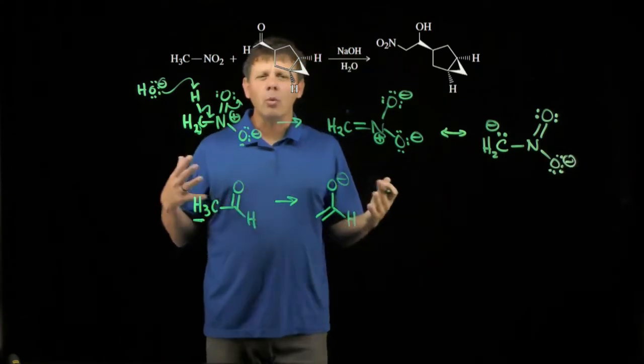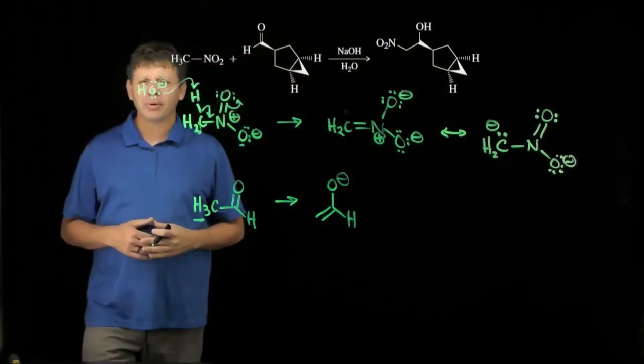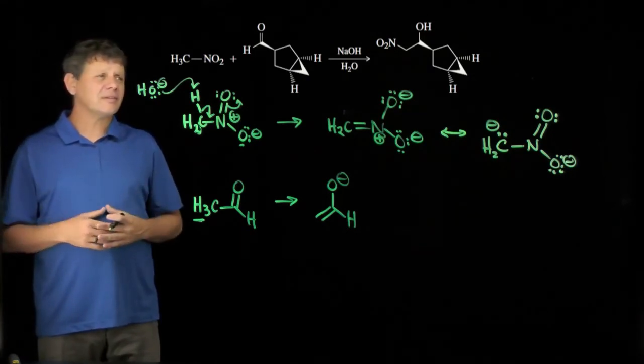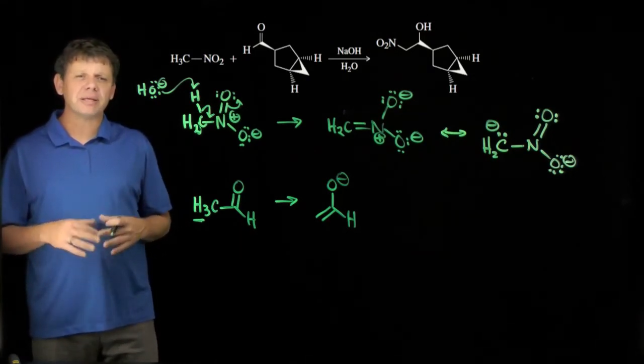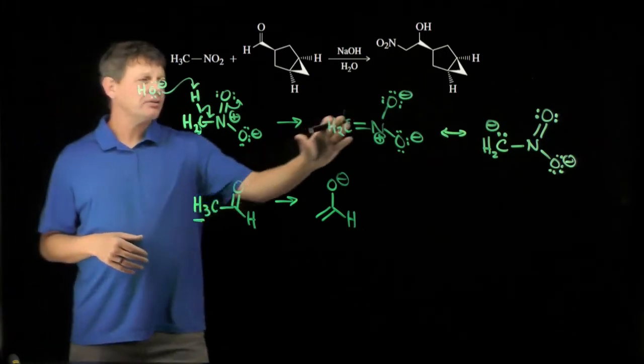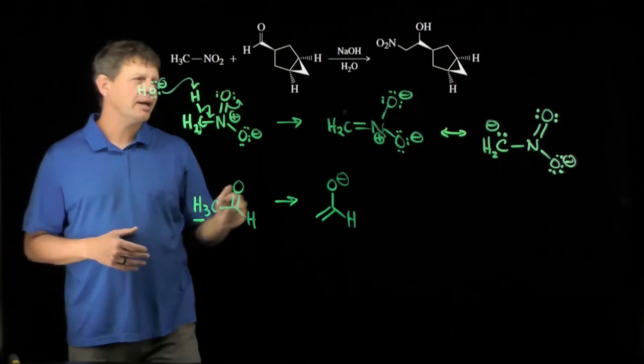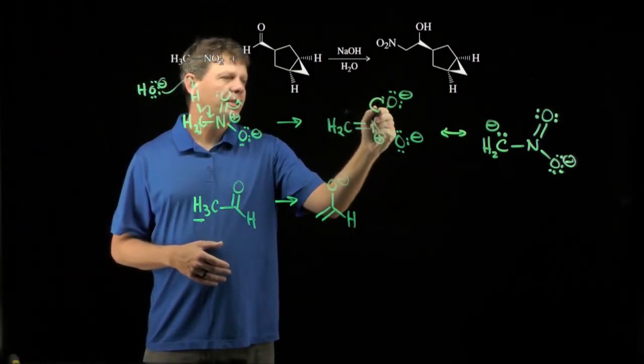So we know why the nitroalkanes can participate in aldol reactions. And doing this analysis first makes this a much easier reaction because now, to do the aldol reaction, we're going to simply take our newly formed enolate and react it with this aldehyde. And so we'll use this resonance structure here.